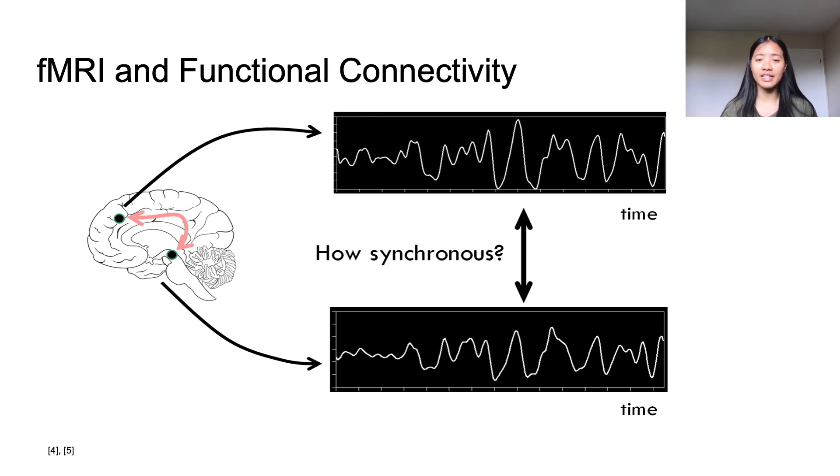Functional connectivity is defined as the temporal coincidence of spatially distant neurophysiological events. But in simpler terms, we can assume that there must exist a relationship between two regions that have similar brain activity. If we look at this image, we see the brain activity of two regions. Although they're not geographically close, they have almost identical peaks when graphed over the same period of time. Therefore, we can interpret that the two regions are functionally connected.